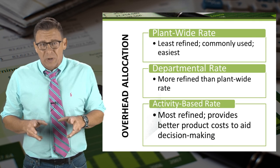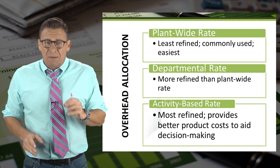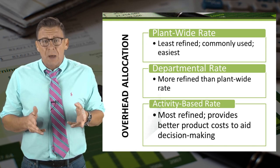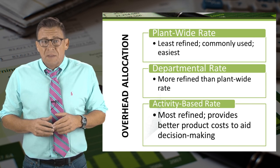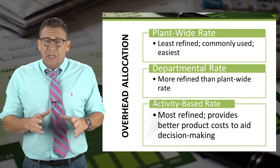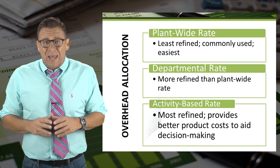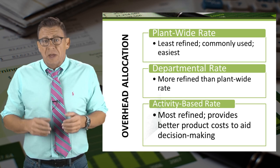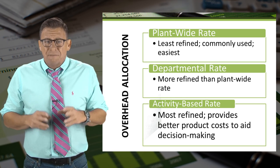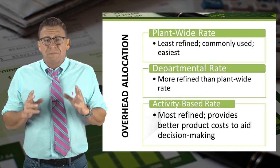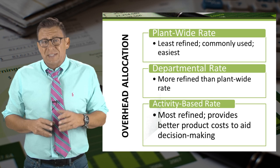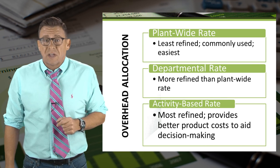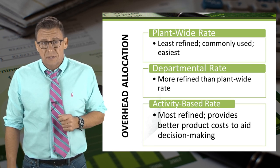There are three common ways to allocate manufacturing overhead to products. The most common is the plant-wide rate, which is what we earlier described as the predetermined overhead rate. Another method is departmental rates. Finally, the most refined method is activity-based costing. This video will focus on the departmental rate method.